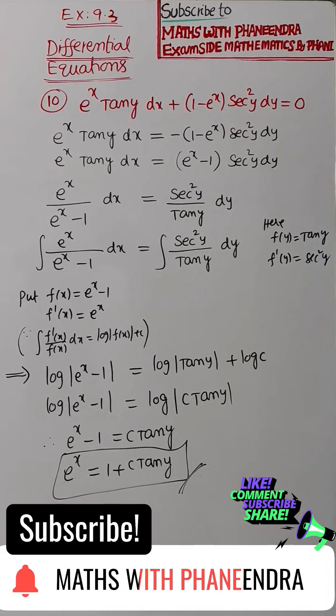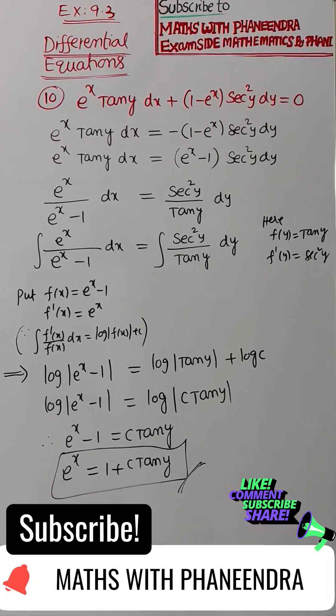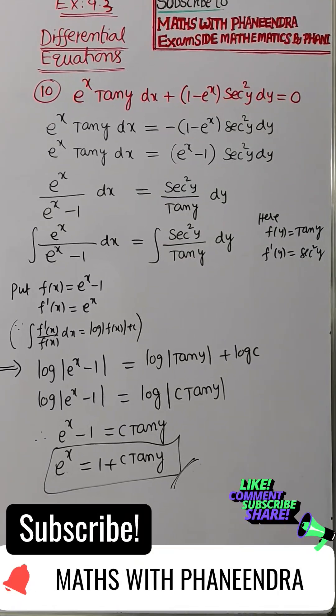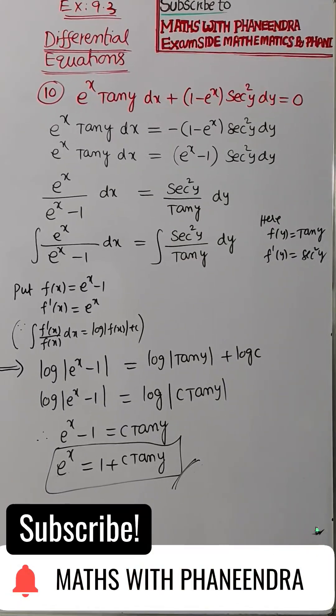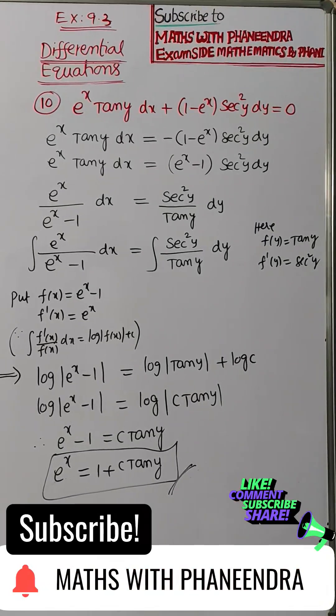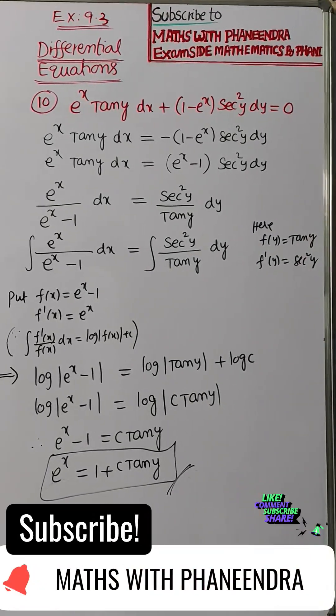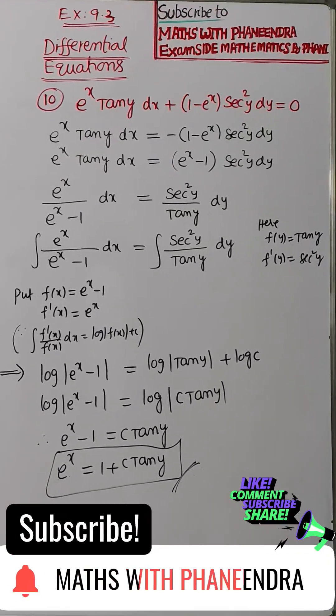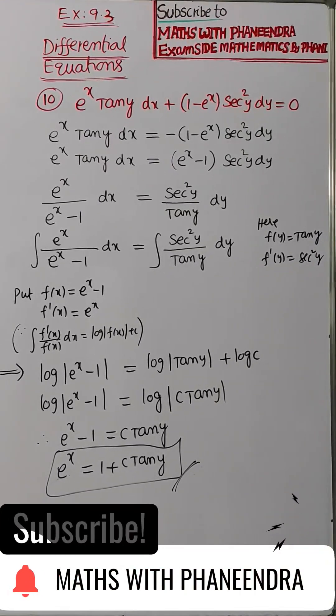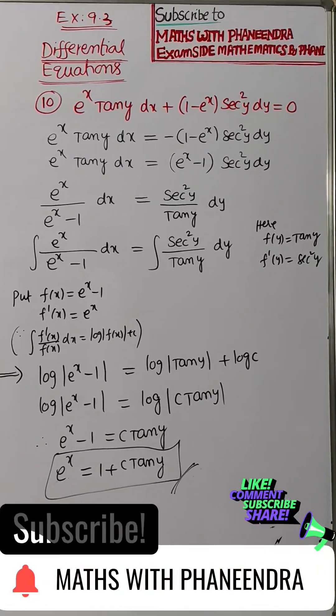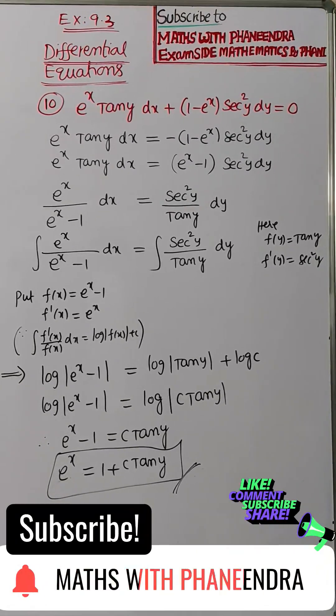So first e power x into tan y into dx equal to 1 minus e power x secant square y dy, we are bringing into RHS side. So minus of 1 minus e power x into secant square y dy. So e power x into tan y dx equal to, we are removing this minus by interchanging, e power x minus 1 into secant square y dy.